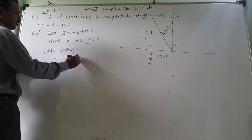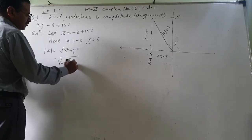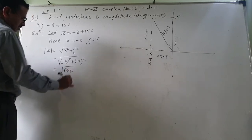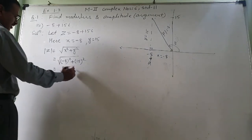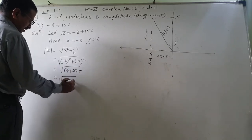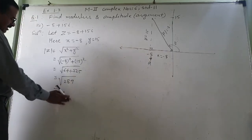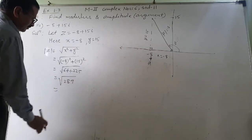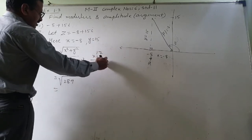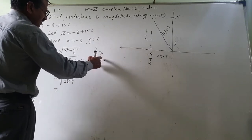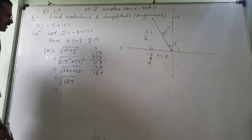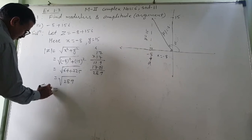Modulus z = √(x² + y²) = √((−8)² + 15²) = √(64 + 225) = √289. Now √289 — let me check: 17 × 17 = 289. Yes, 7 × 7 = 49, carry 4, 7 + 4 = 11, giving 289. Therefore modulus z = 17.